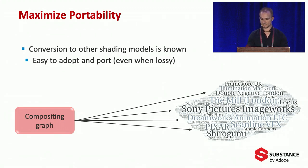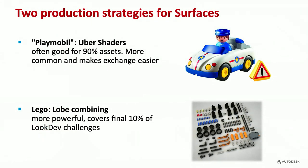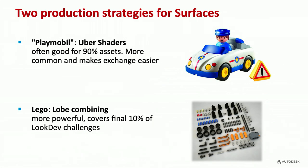Uber shaders serve us well for the majority of cases and we like to split the two strategies — we nickname them Playmobil and Lego. This nomenclature came from a friend at Weta. Playmobil: larger uber shaders, a little more rigid, good for the majority of assets, easy to exchange because they're clearly documented. On the other hand, the Lego approach combines your own lobes with pattern modulation — more powerful, you can really do whatever you want and even break the rules of physics. That covers the final small percentage of look dev cases, though there are studios that use it exclusively. Thanks to recent additions to MaterialX — thanks Autodesk — MaterialX can now support both the Lego approach and, packaged nicely, the Playmobil approach. That's exactly how Standard Surface is represented.